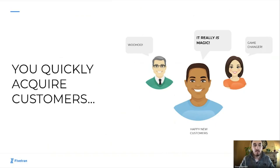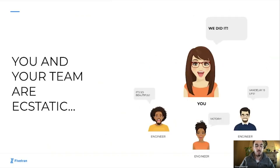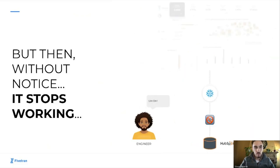Because you have such an amazing app and the app is working, it shouldn't be a surprise that you quickly acquire new customers. You and your team are ecstatic — you've worked so hard on this product, you believed in the predictions as providing value, and now you're seeing new customers come on and revenue flowing into your company. But then, without notice, it stops working. Data discontinues its flow from the source system into your application.